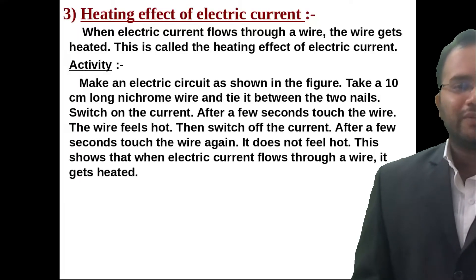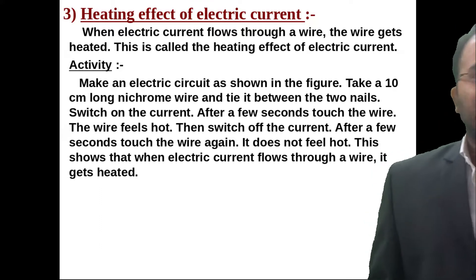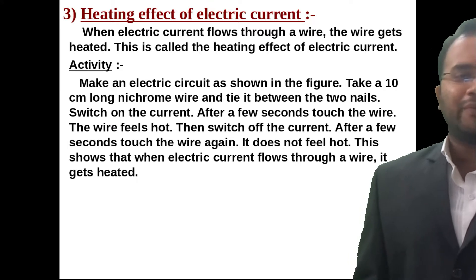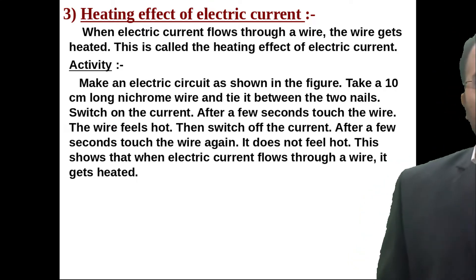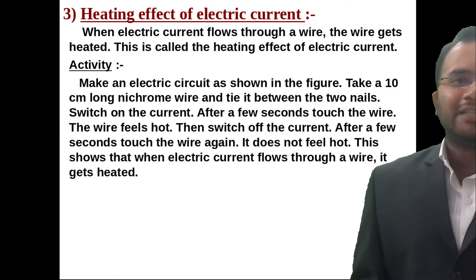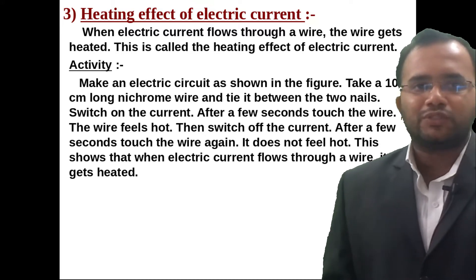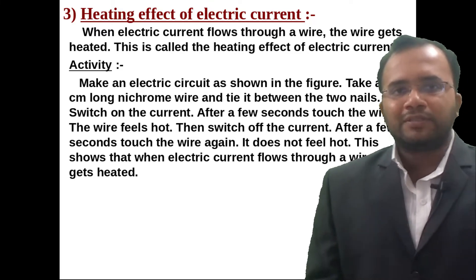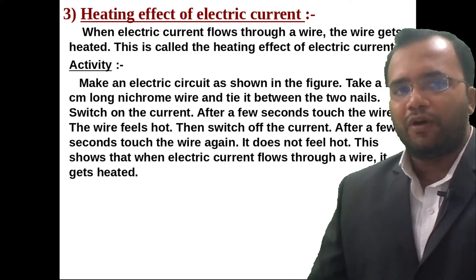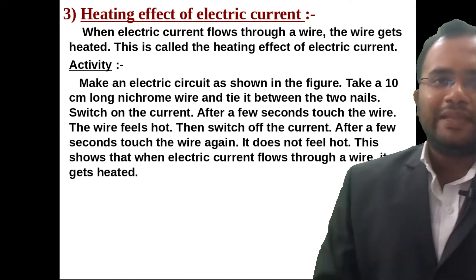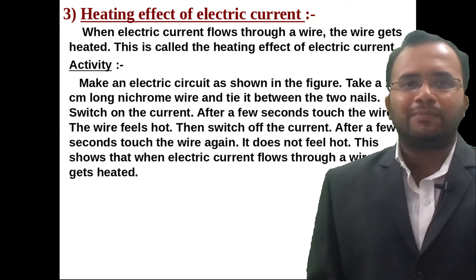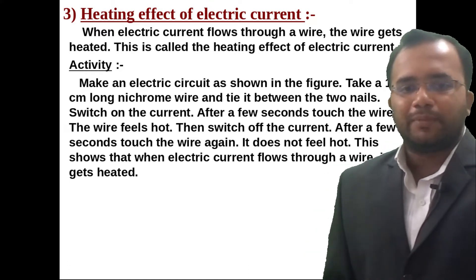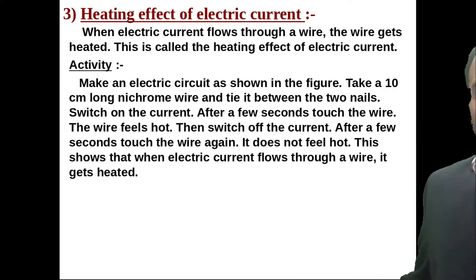Next is the heating effect of electric current. When electric current flows through a wire it produces some amount of heat, which is a loss — I²R, that is a power loss. So that power loss is converted into the form of heat. When electric current flows through any conductor it produces some loss and hence produces some heat. This is called the heating effect of electric current.